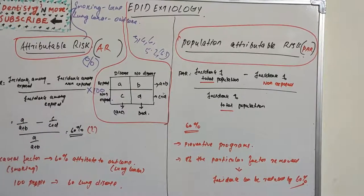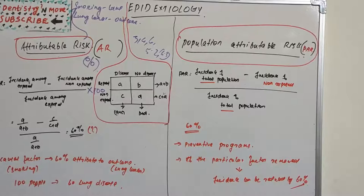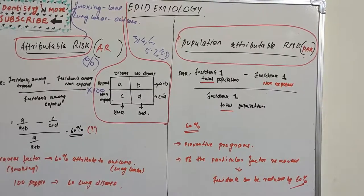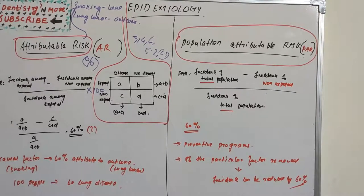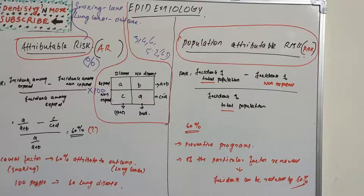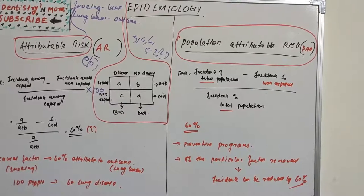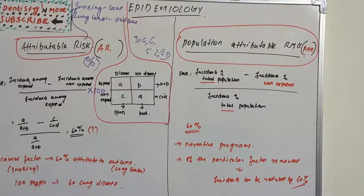So: (a/(a+b)) minus (c/(c+d)), divided by (a/(a+b)). If we get 60%, that means the attributable power of smoking is 60% — in other words, if 100 people smoke, 60 of them will get lung cancer. That is the attributable risk of that particular causal factor.